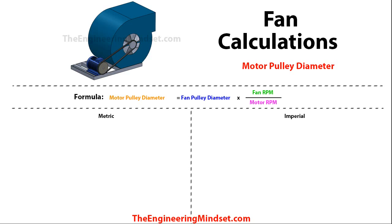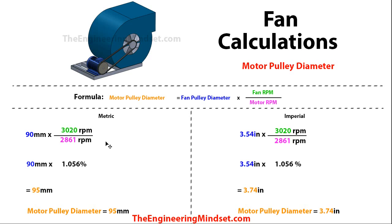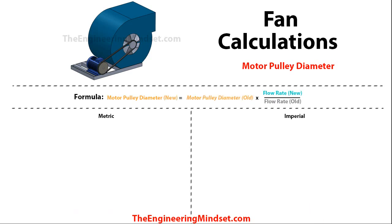Next we can calculate the motor pulley diameter — for instance if a new motor or fan has been installed. The formula is: motor pulley diameter = fan pulley diameter × (fan RPM ÷ motor RPM). Dropping in the numbers — fan pulley of 90 mm (3.54 inches) — the division of the two RPMs gives 1.056, which multiplied by the fan pulley diameter gives a motor pulley diameter of 95 mm (3.74 inches).